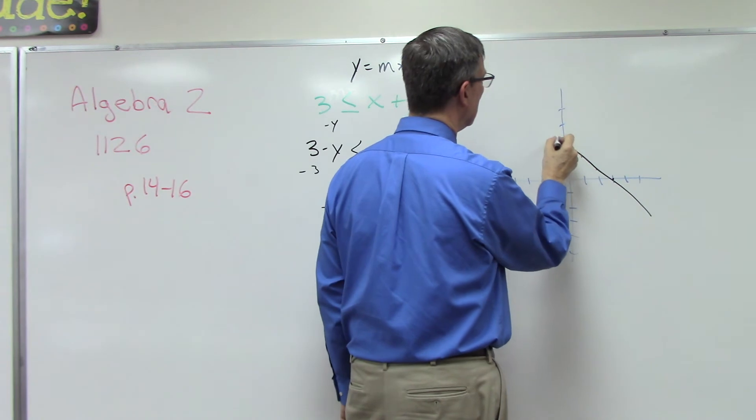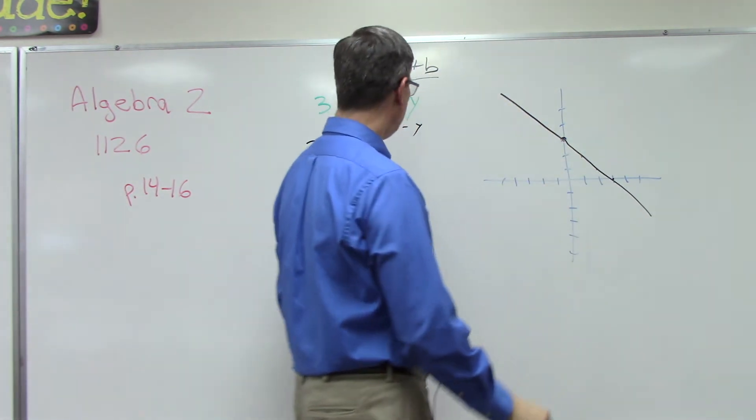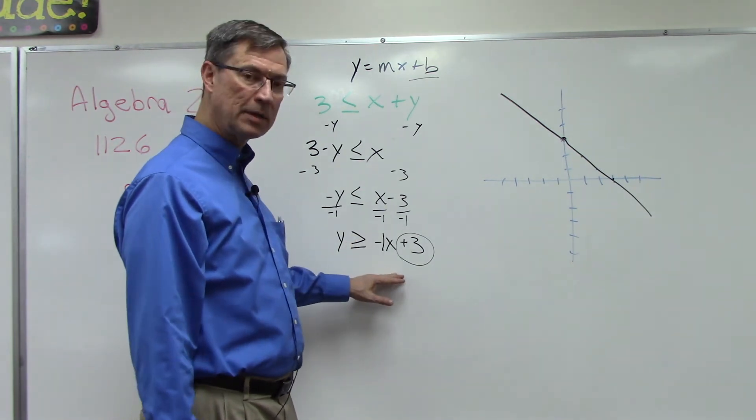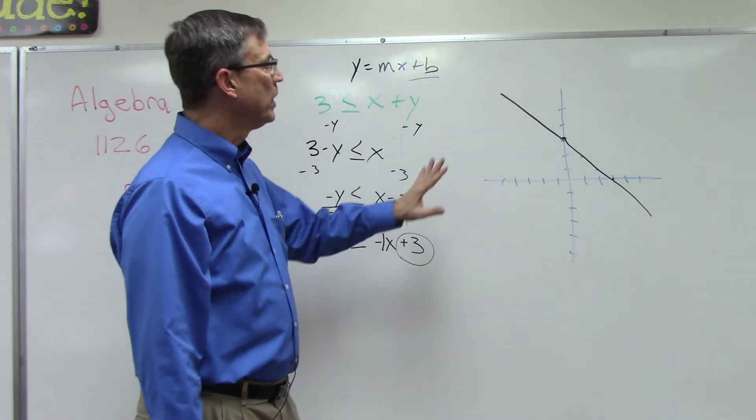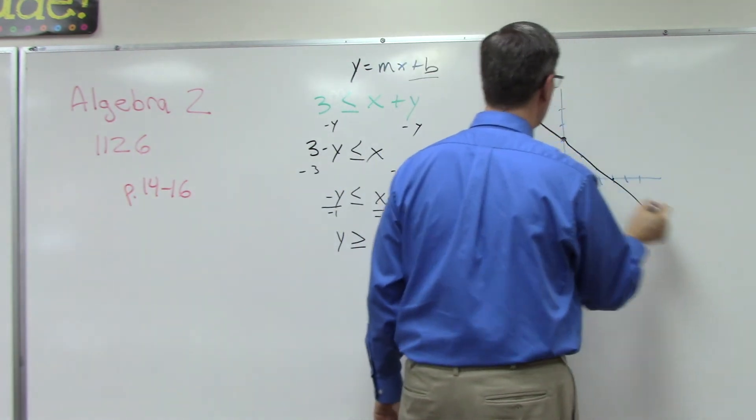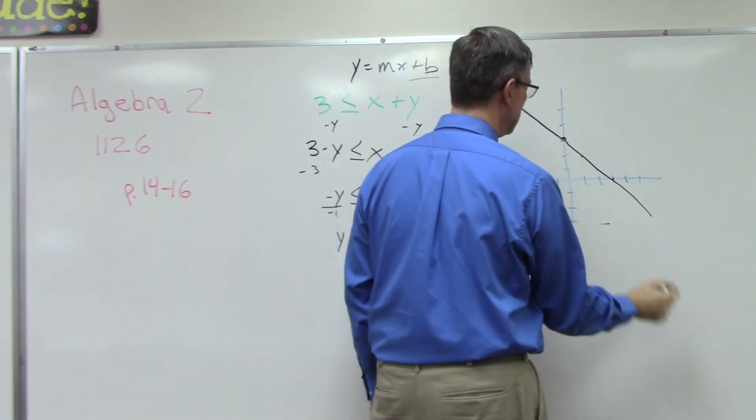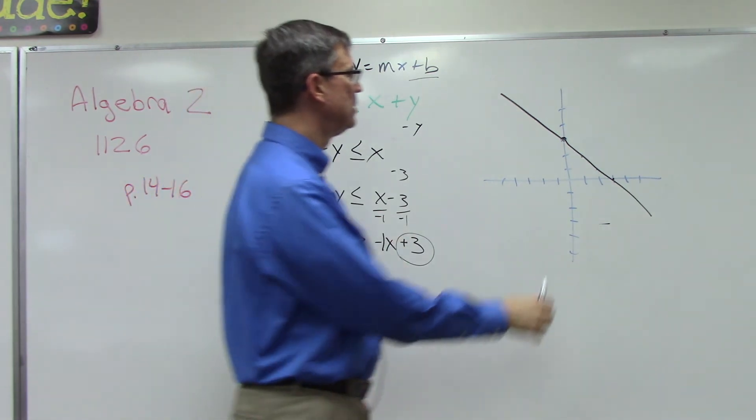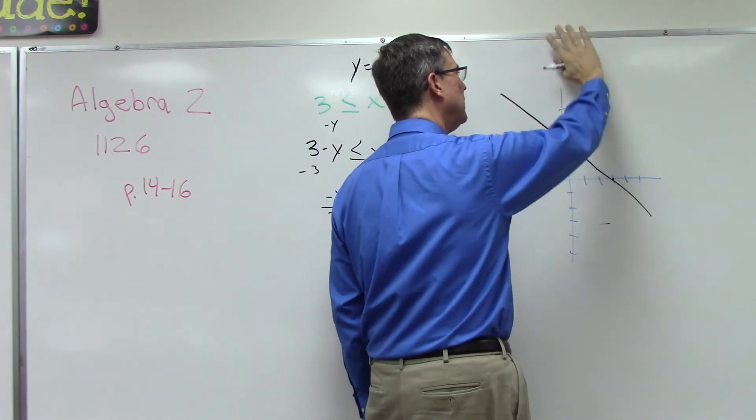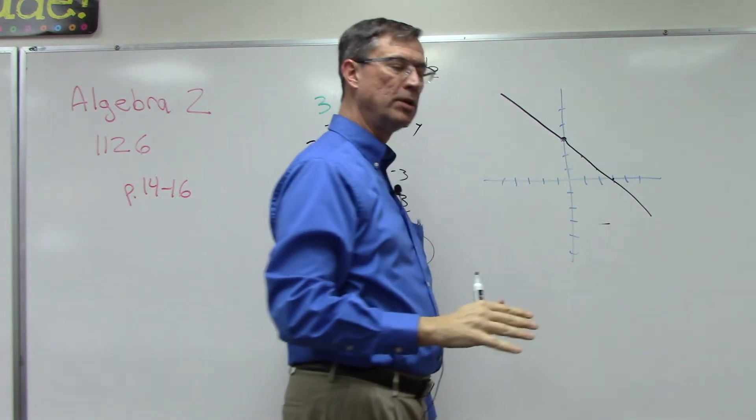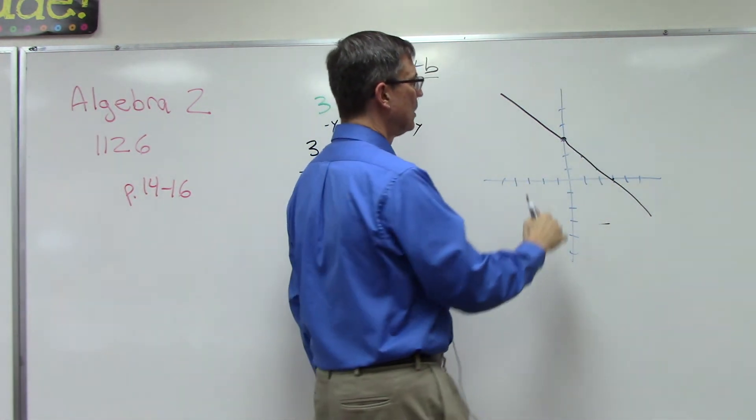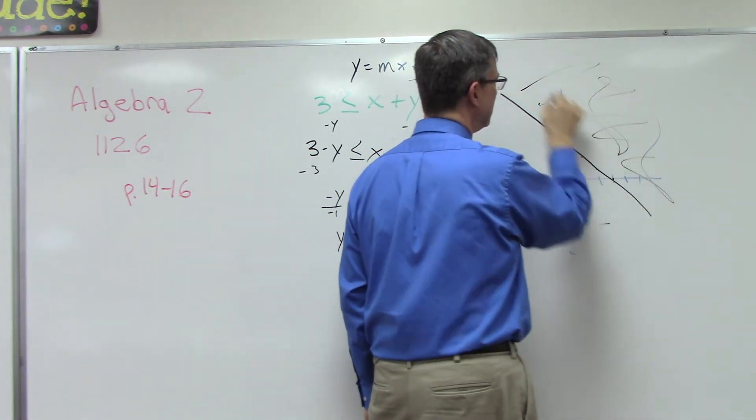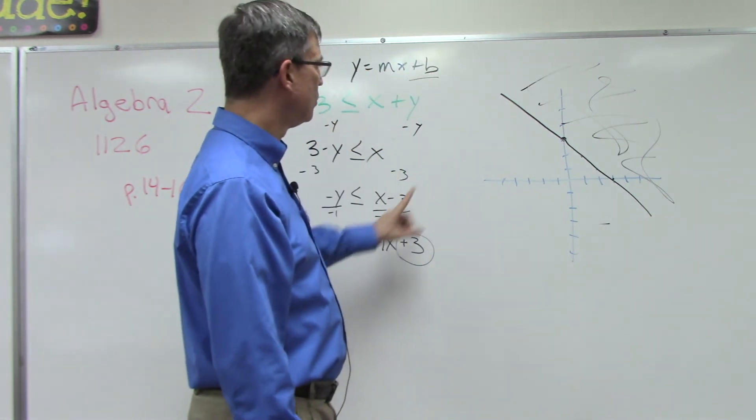But notice it says y is greater than that, so we are going to shade either this side of the line or this side of the line. Because it's greater than, that means looking at this y-axis, we want to take the upper side, the greater side of that axis compared to the other side. So we would shade all of this side to be greater than.